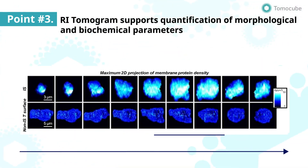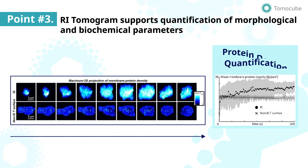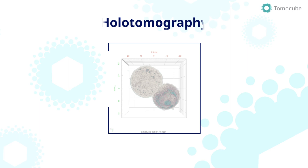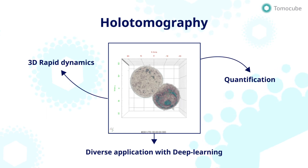Furthermore, protein densities can also be calculated from refractive index values of a membrane surface. When the immunological synapse was formed, a dramatic increase in the membrane protein densities of the synapse area was observed. These results show that holotomography can be used to gain insight into what happens in cells during the immune response.